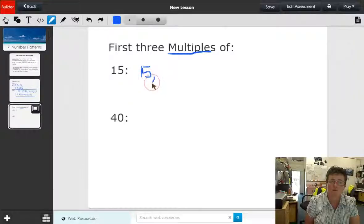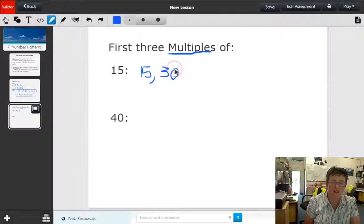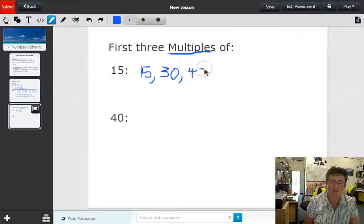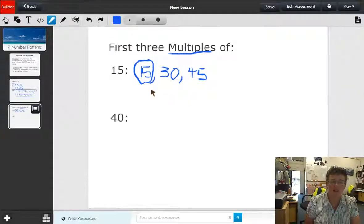And the next multiple of 15 is 15 times 3 which is 45. So multiples, you'll see, start with the same number because that's the number times 1, and then they go up and they can become infinitely large.